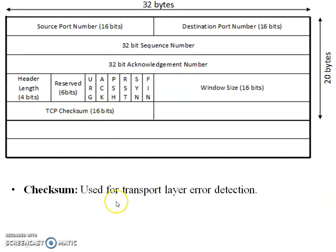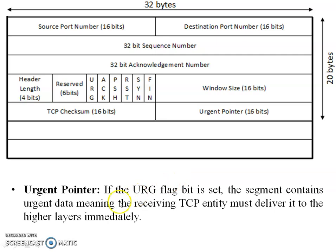The TCP checksum is used for transport layer error detection — mostly the checksum is used for error detection as well as data integrity. The urgent pointer field is active when the URG flag is set to one. When set, the segment contains urgent data, meaning the receiving TCP entity must deliver it to the higher layer immediately.